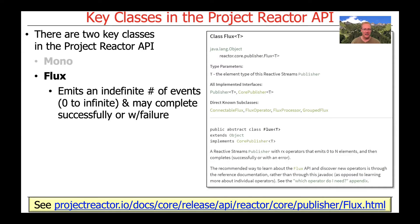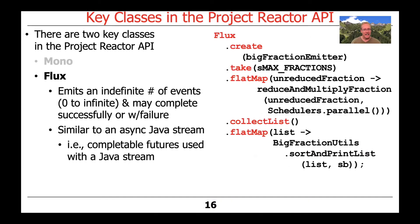The other main class defined in the Project Reactor API is known as Flux. A Flux can emit an indefinite or infinite number of events — from zero to infinity — and may complete successfully or with failure, depending on what happens. In some ways, a Flux is a bit like an async Java stream. For example, if you were to take a regular sequential Java stream and combine it with Java CompletableFutures, you would get behavior semantically very similar to a Flux. We'll take a look at lots of interesting examples of Fluxes coming up shortly.